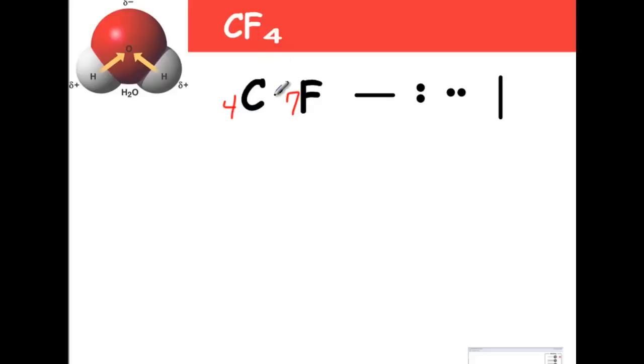So they look at each other and say, let's pool all of our electrons together. There's only one carbon, so carbon's got four. There's four fluorines. So four times seven is 28. And then when you add carbons plus fluorines together, we get 32 electrons.